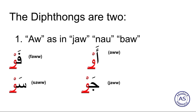Here we have some more examples where the first letter is changed and the second letter remains Waw. The first letter is Alif — 'Aw'. Second example: letter Fa — 'Faw'. Third example: letter Jim — 'Jaw'. Fourth example: letter Sin — 'Saw'. Let's check the rules: yes, all first letters are different — Alif, Fa, Waw, Jim, Sin — and all have vowel sign Fatha.